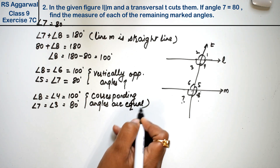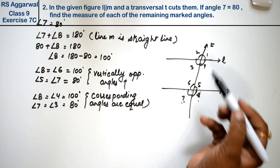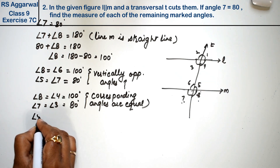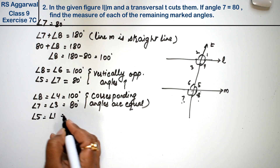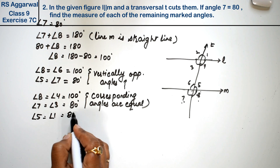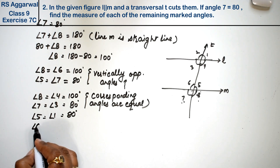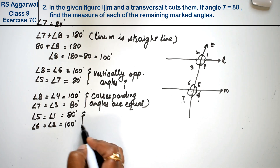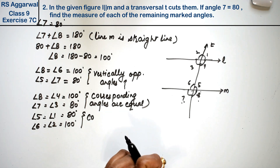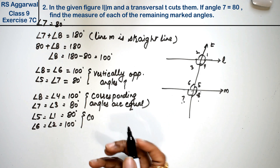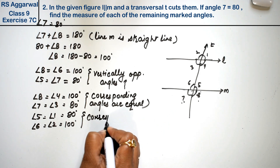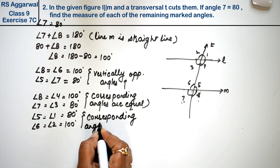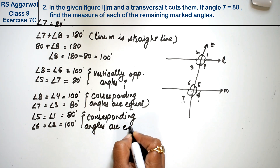Similarly, angle 1 corresponds to angle 5, so angle 1 is 80 degrees. And angle 2 is equal to 100 degrees. Why? Corresponding angles — you can also prove it by alternate angles or vertically opposite angles, it's one and the same thing. Corresponding angles are equal.